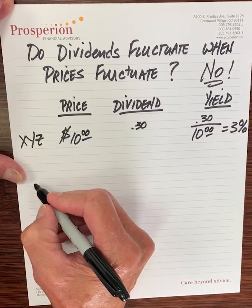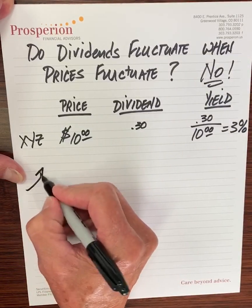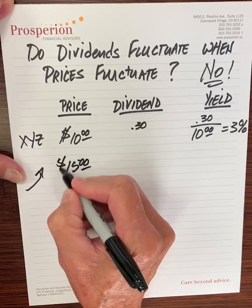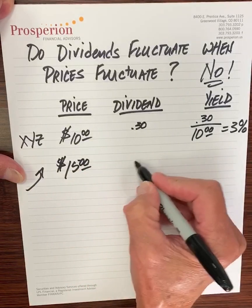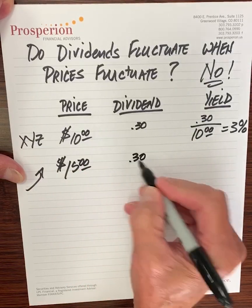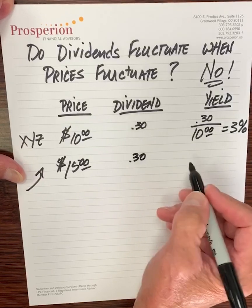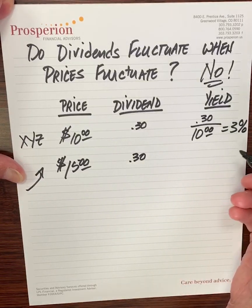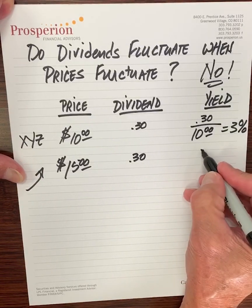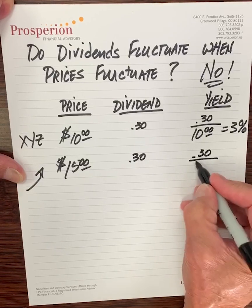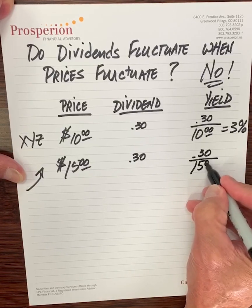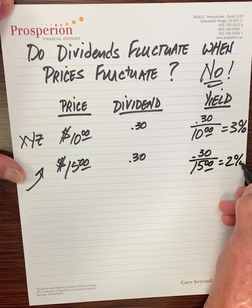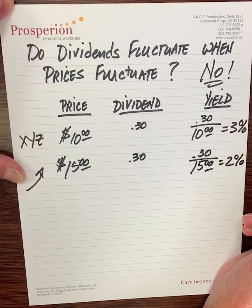Let's assume that XYZ Corporation goes up in value to $15 per share. The dividend rate still is $0.30 per share. So when we calculate the yield, it's $0.30 divided by $15 per share, and now it calculates out at a 2% yield.